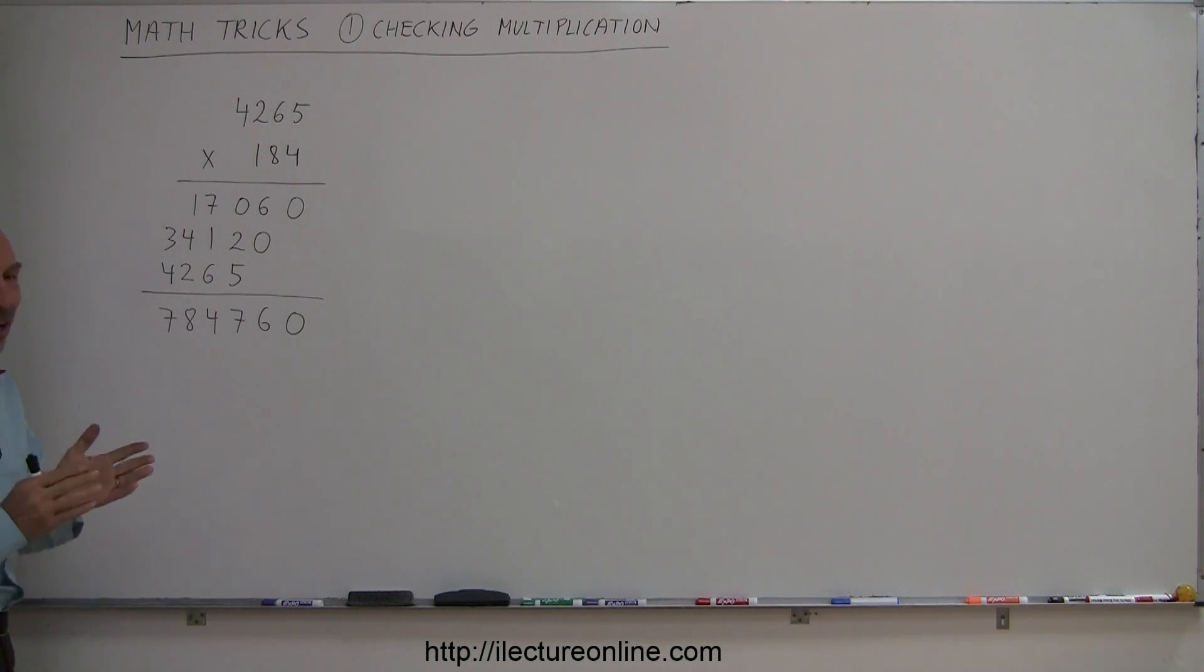First, we're going to look at how to check your multiplication. You might have learned how to do multiplication longhand. Let's say we have the number 4,265 and we're multiplying times 184. I worked out the problem here before you. Now the question is: is this correct? Did I make an error or not? There's a very interesting way to check that and let me show you how.